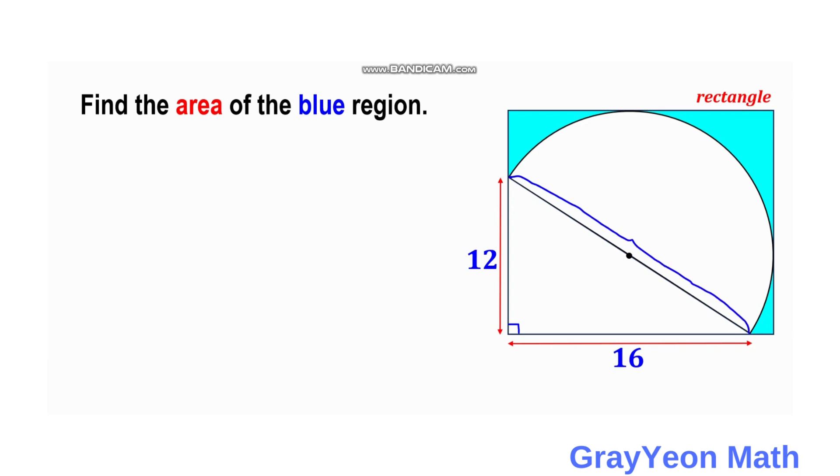To get the hypotenuse we label this as c, so c is equal to the square root of 12 squared plus 16 squared.